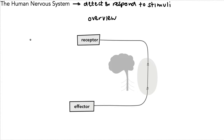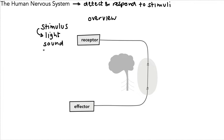We've got a receptor here. A stimulus will be detected by a receptor. The stimulus could be light, it could be sound, it could be taste — which is actually chemicals that have been detected — same with smell, or it could be touch. These are all stimuli.